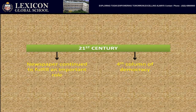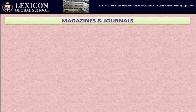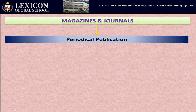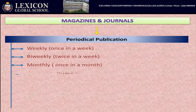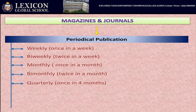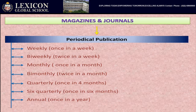After understanding newspapers, let us go to the next medium of mass media — magazines and journals. They are periodical publications. They are published weekly (once a week), bi-weekly (twice a week), monthly (once a month), bi-monthly (twice a month), quarterly (once in four months), six-monthly (once in six months), annually (once a year), and some journals and magazines are published at no fixed time.